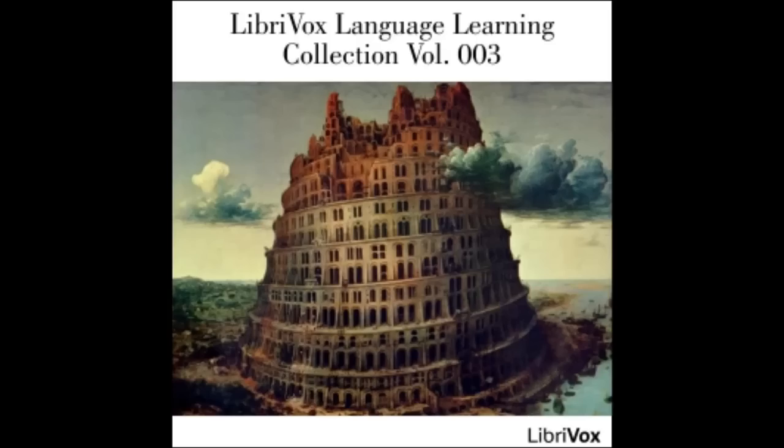Neuter genitive: τούτων; dative: τούτοις. Dual — masculine nominative and accusative: τούτω; feminine nominative and accusative: ταύτα; masculine genitive/dative: τούτοιν; feminine genitive/dative: ταύταιν; neuter nominative and accusative: τούτω; genitive and dative: τούτοιν. Note: οὗτος stands before or after, but not — except with an adjective — between the article and noun, as οὗτος ὁ λόγος or ὁ λόγος οὗτος: this word.